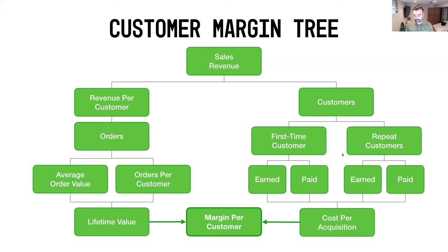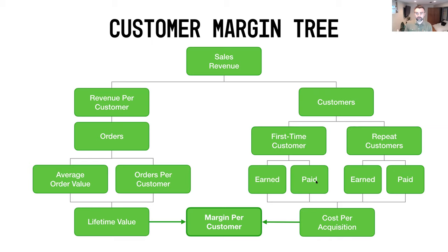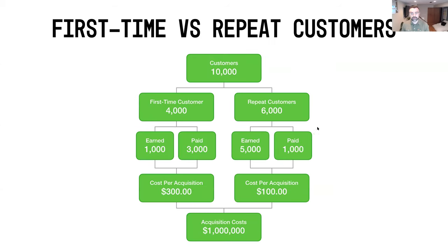I've updated the customer margin tree a bit to reduce confusion around the cross-sections. You'll notice we now have 'earned versus paid' below each of our first-time and repeat customer categories. Most of the time you want earned customers in both scenarios, but there are cases where you may need to pay for repeat customers — we'll cover that tomorrow. Today we're dialing in on first-time versus repeat customers.